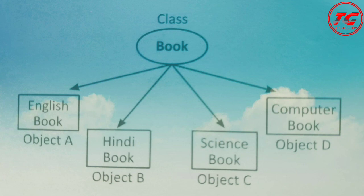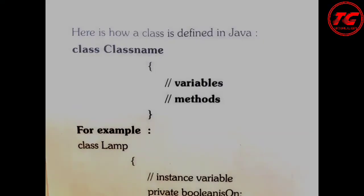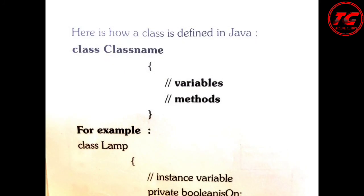Let's take an example of a book. A book is a class, and using that class we can derive different objects — like an English book, science book, or computer book. All books belong to the book class, so all these are instances of the same class.